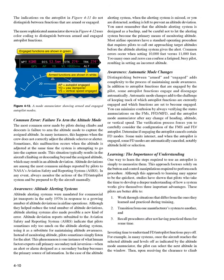The more sophisticated enunciator shown in Figure 4-12 uses color coding to distinguish between armed and engaged autopilot functions. Common Error: Failure to Arm the Altitude Mode. The most common error made by pilots during climbs and descents is failure to arm the altitude mode to capture the assigned altitude. This often happens when the crew does not correctly adjust the altitude selector or alerter, or when the altitude is adjusted at the same time the system is attempting to go into capture mode. This typically results in the aircraft climbing or descending beyond the assigned altitude, which may result in an altitude deviation. Altitude deviations are among the most common mishaps reported by pilots to NASA's Aviation Safety Reporting System (ASRS).